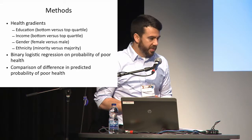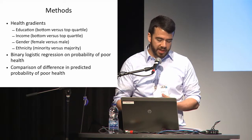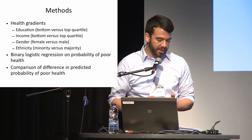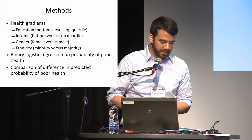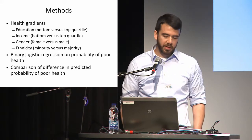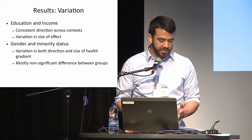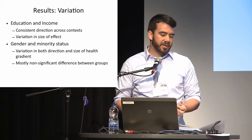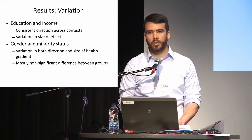Briefly on our methods: we proceed in a couple of stages. We start by estimating health gradients based on education, income, gender, and minority status within each country, performing a binary logistic regression on the probability of poor self-rated health. For each variable of interest, we calculate the difference in predicted probability between different social positions. For education and income, we divide the country distribution into quartiles — the bottom representing low education or income, the top quartile representing relatively high levels. Although this loses some precision, it allows us to compare relative position while avoiding issues with different classifications across a large range of countries.